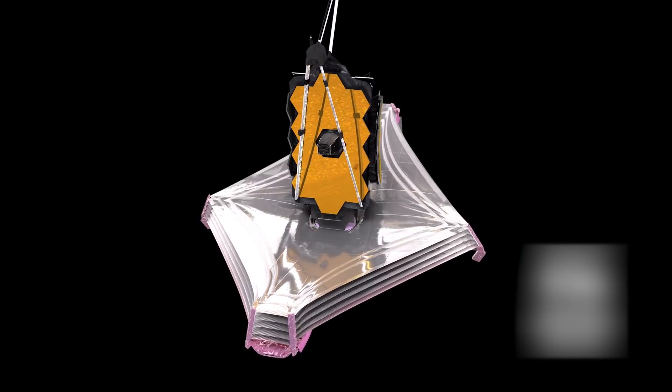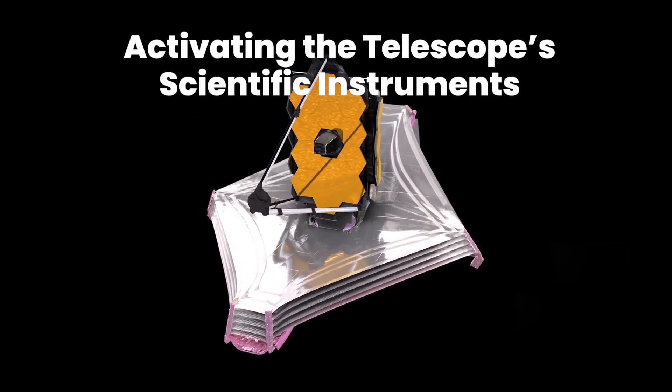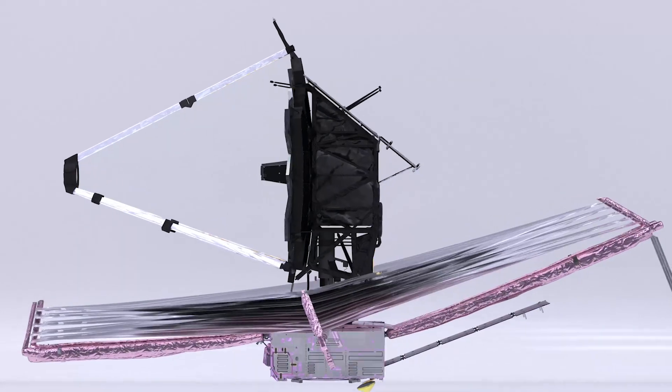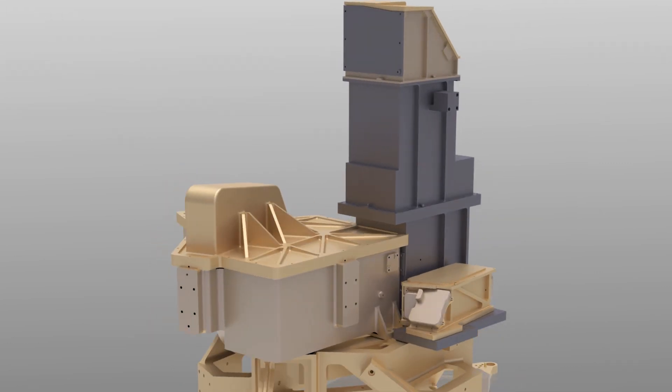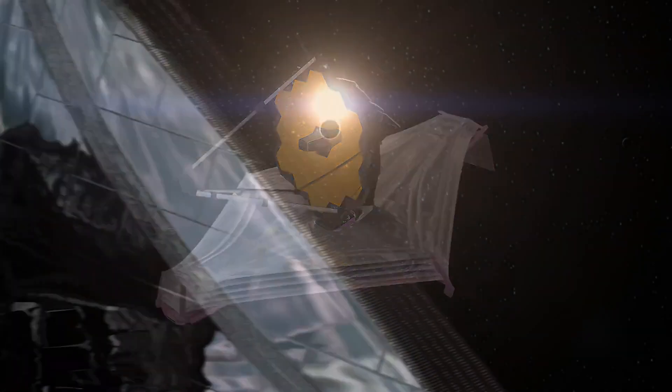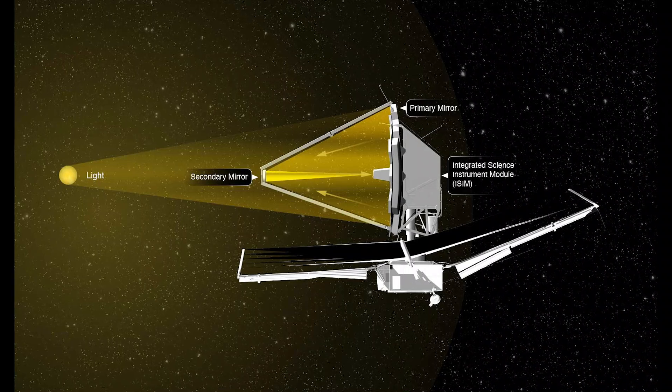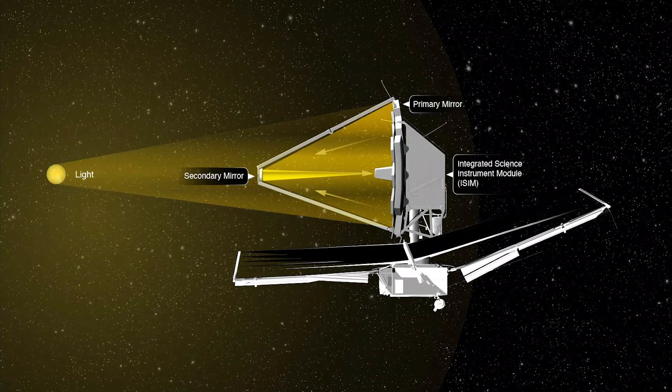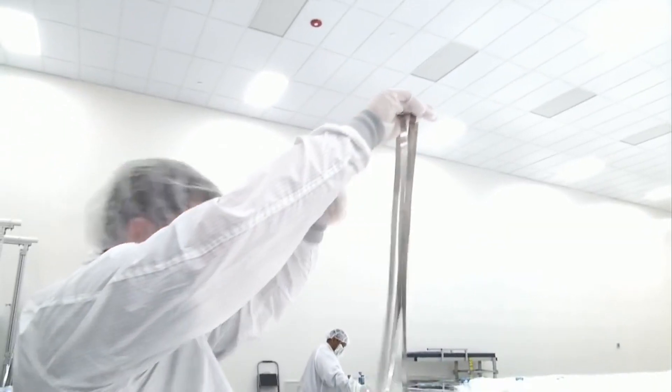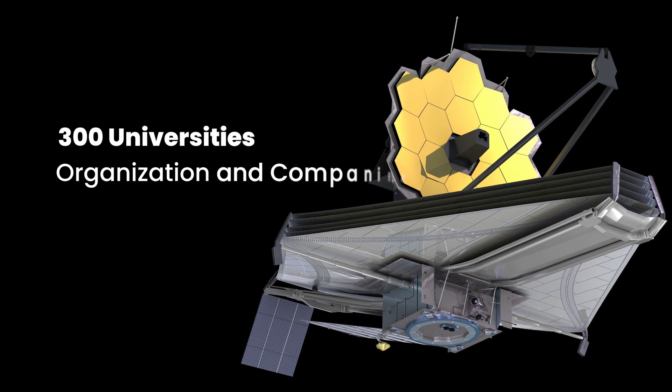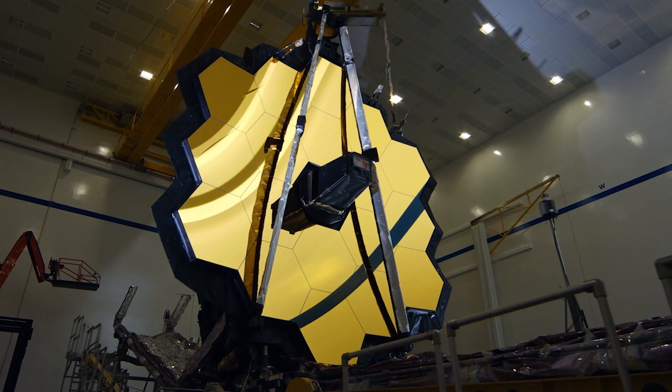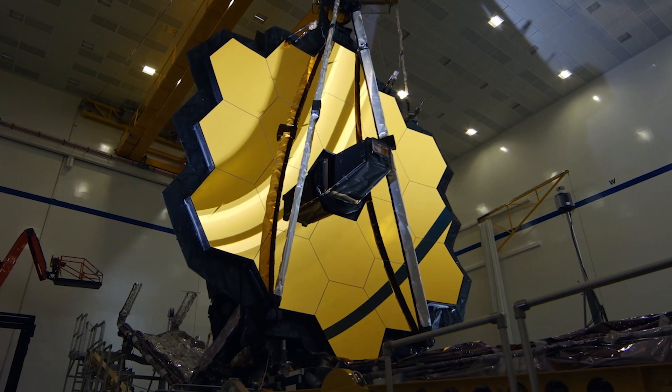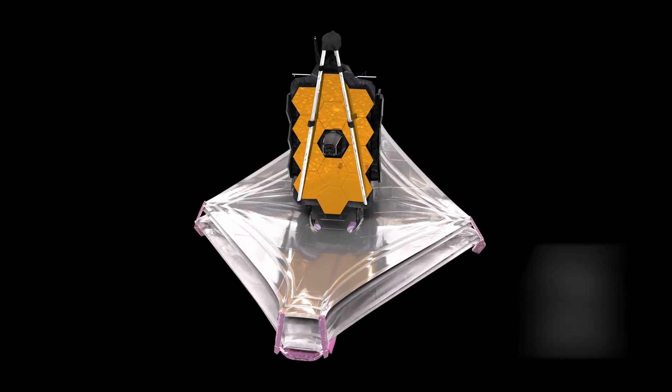Another important calibration test involved activating the telescope's scientific instruments one by one to ensure their proper functioning. These instruments included the near-infrared camera, the near-infrared spectrograph, and the mid-infrared instrument, each with specific capabilities for observing the universe. The successful completion of these complex procedures marked a significant milestone in the James Webb Space Telescope project, which involved over 300 universities, organizations, and companies from 29 U.S. states and 14 countries. While challenges were anticipated, the telescope's flawless performance during these tests was truly remarkable and generated excitement within the scientific community.